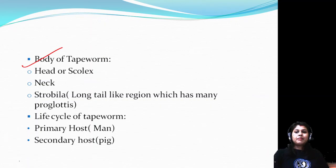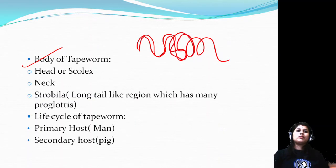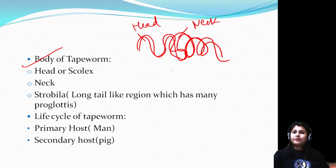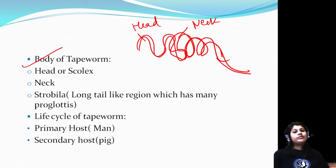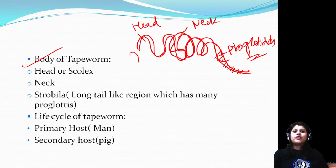Body of tapeworm: their body has a head, followed by a neck, then the strobila. The strobila is a long tail-like region with many small proglottids. Proglottids are present in the tail region. That is the structure of the tapeworm body - ribbon-like.